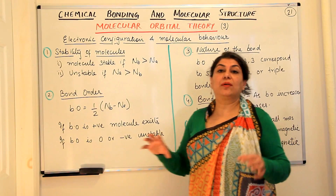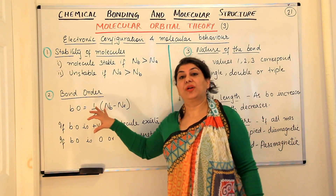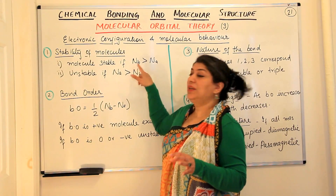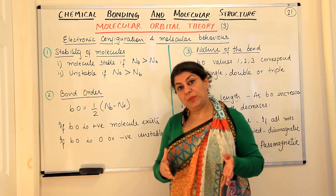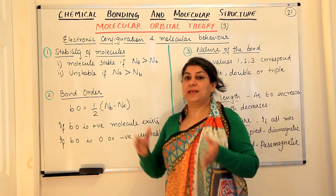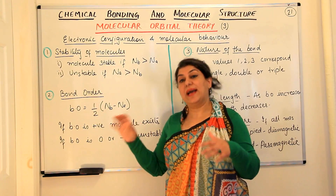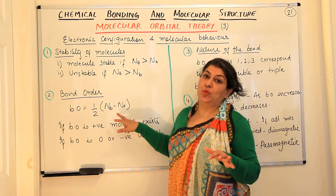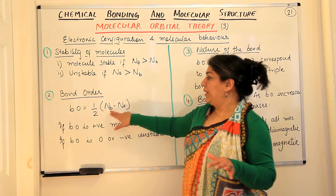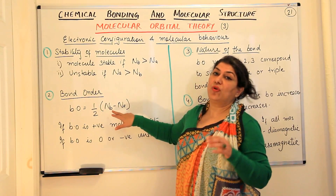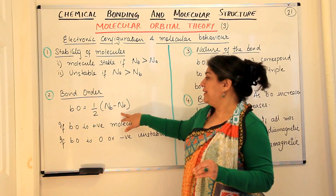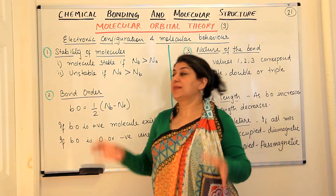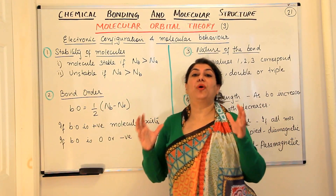The second thing you can calculate from the electronic configuration is the bond order. Now that you know the number of electrons in bonding molecular orbitals and the number in anti-bonding molecular orbitals, the bond order is given by: half of (number of electrons in bonding molecular orbitals minus number of electrons in anti-bonding molecular orbitals), that is, bond order = ½(Nb − Na).